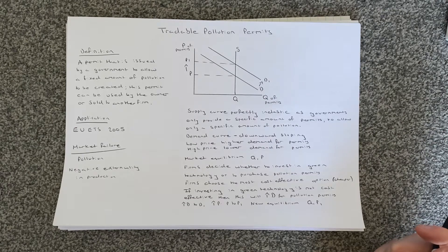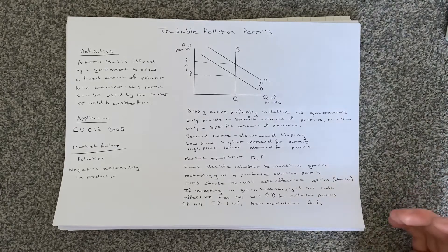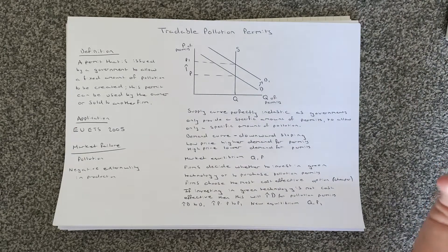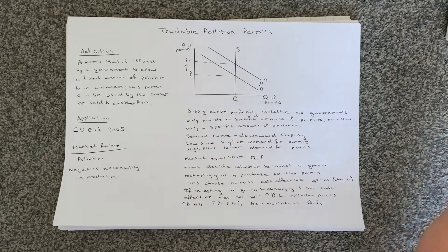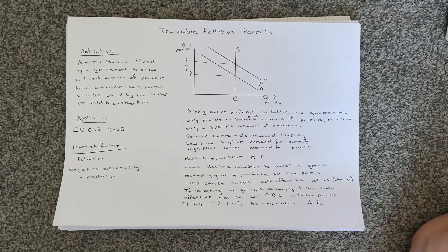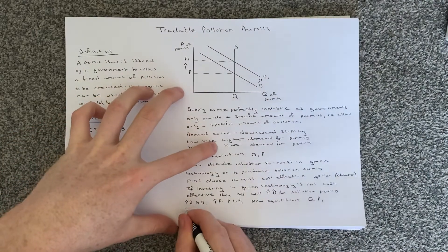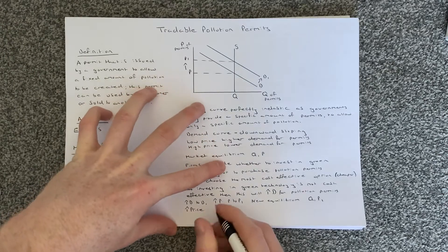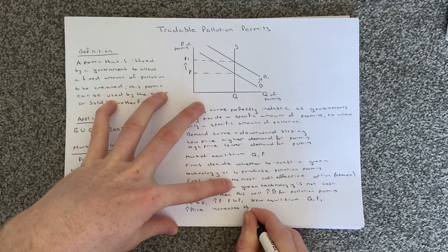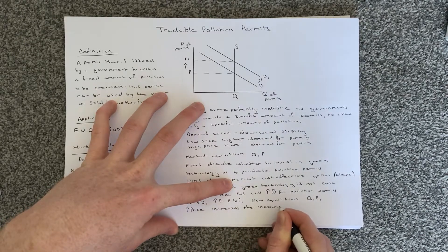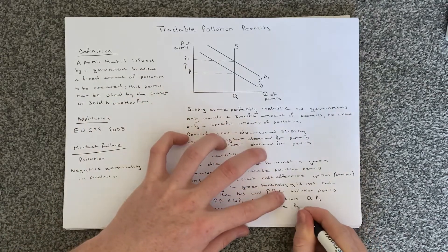Firms that have not invested in green technology and bought more pollution permits are polluting more. By buying more permits and increasing demand, the price of permits rises, and this increase in price increases the incentive for firms to invest in green technology.